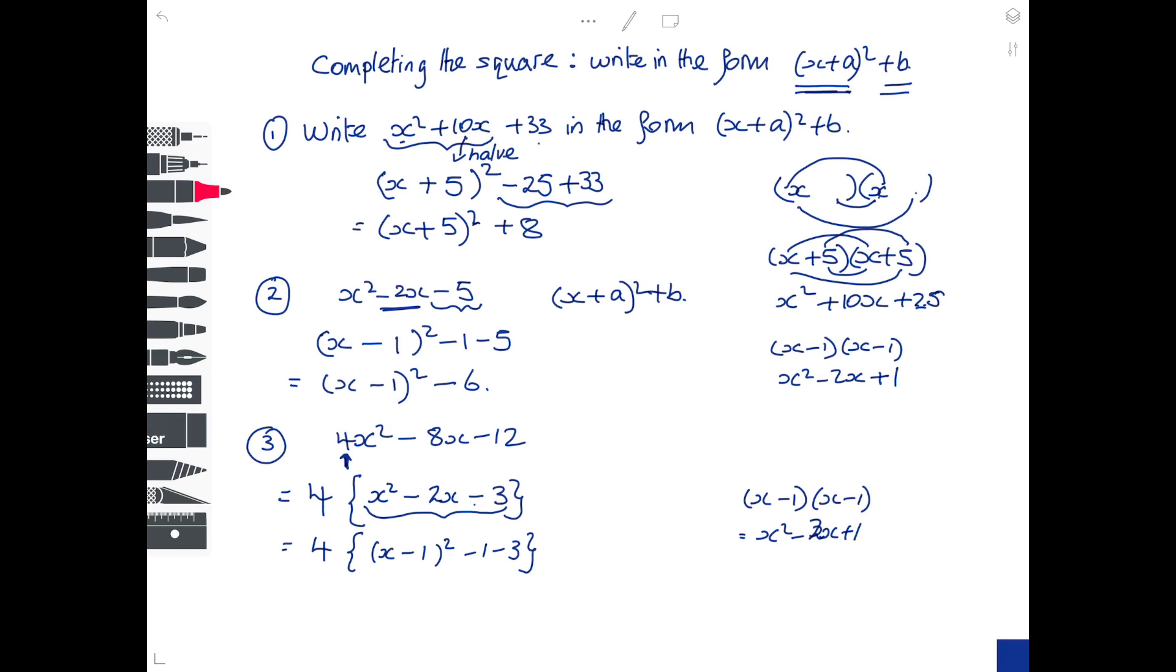So I have 4 lots of (x-1)² - 1 - 3 is -4. And then you can choose whether you leave the expression written like that, or you expand out the curly bracket, in which case you get 4(x-1)² - 16, because 4 times 4 gives you 16.